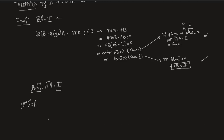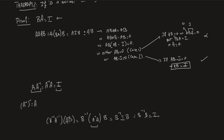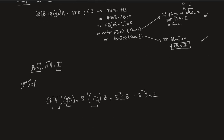For example, consider B⁻¹A⁻¹ multiplied by AB. This equals B⁻¹ times (A⁻¹A) times B. Since A⁻¹A is identity, we get B⁻¹IB, which is B⁻¹B, which is I. So what have we proved? We've proved that the inverse of AB is B⁻¹A⁻¹. Why is this important? When inverting a product of two matrices, you exchange the roles of inversion of each matrix, then multiply.